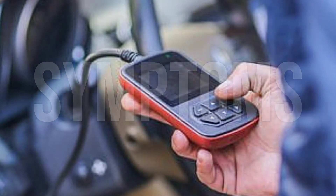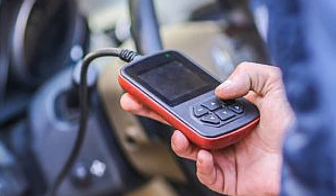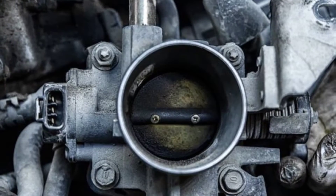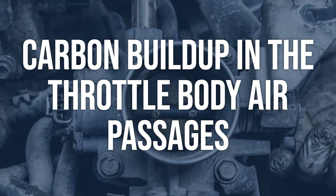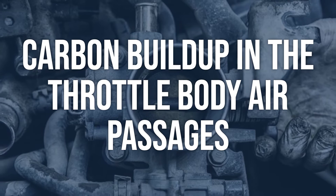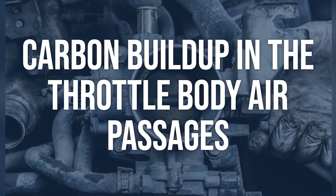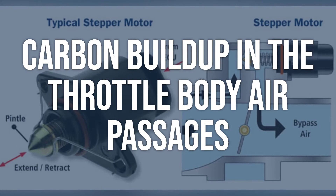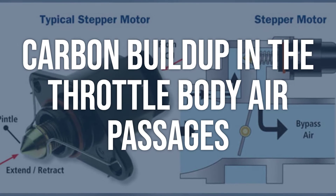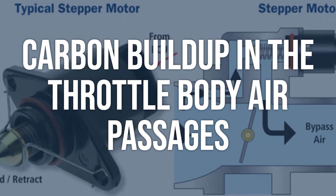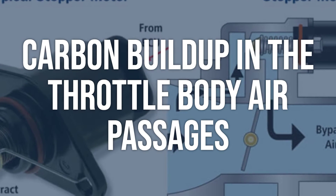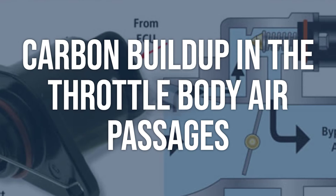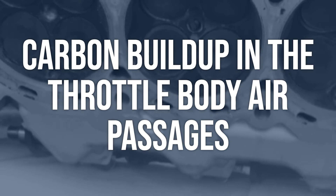Now we talk about possible causes and how to diagnose and fix. Carbon buildup in the throttle body air passages. To diagnose this issue, you can visually inspect the throttle body and air passages for any signs of carbon buildup. Use a flashlight to look for black, sooty deposits. You can also use a throttle body cleaner to clean the passages and see if the issue improves.